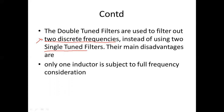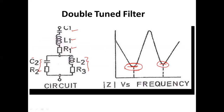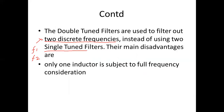In a single tuned filter we eliminate only one frequency, but here we eliminate two different discrete frequencies, such as f1 and f2, as shown in the previous slide. Two discrete frequencies are removed using this double tuned filter circuit. Our task is to remove unwanted signals — harmonics — because harmonics are generated in HVDC systems by converters. The double tuned filter removes two discrete harmonics.